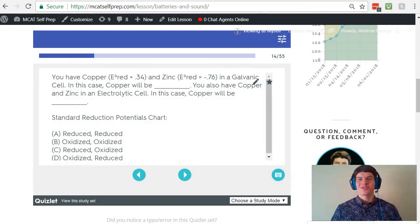Let's take a second look at the answer choices. As we discussed, copper is reduced in a galvanic cell and oxidized in an electrolytic cell. Therefore, answer choice C is the correct answer here.